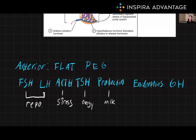Next up we have endorphins — those feel-good hormones that help relieve pain. And finally, we have GH, or growth hormone. Growth hormone stimulates growth and cell reproduction. It also regulates the metabolism of carbohydrates, lipids, and proteins, and plays a role in the healing of injuries.